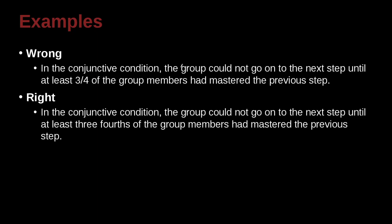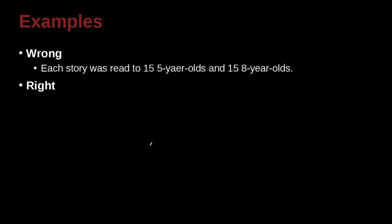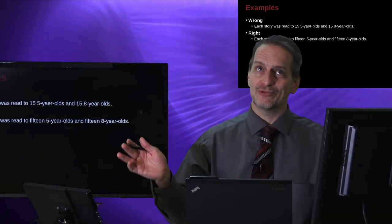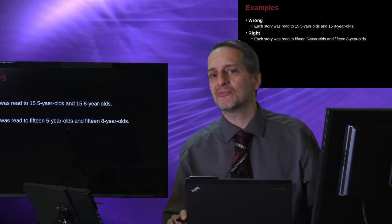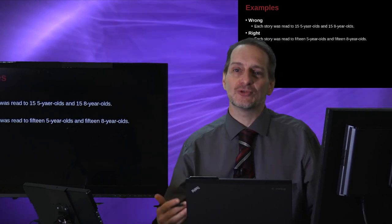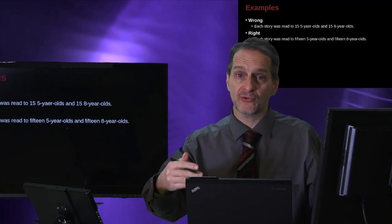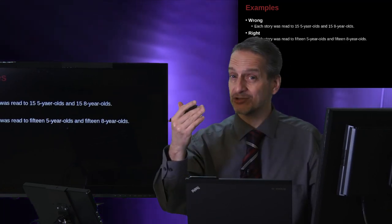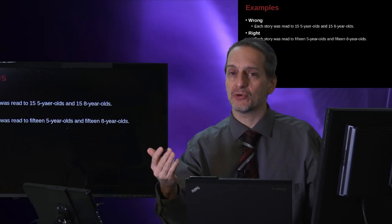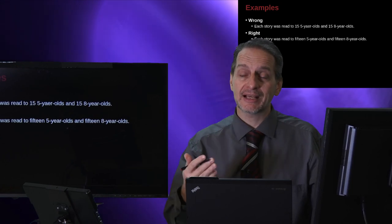In the conjunctive condition, the group could not go on to the next step until at least three-fourths of the group members had mastered the previous step. Here is our fraction three-fourths, and remember we said that in this case, you need to spell it out, three-fourths, because it's a common fraction or a ratio. Except in the case of ratios, you go ahead and you write the ratio. Oh boy, confusing, right? It's really helpful to have the rules next to you, and I just remind you that you can buy the APA guidelines and the MLA as ebooks from Amazon and other ebook providers, which is super convenient to have it on your cell phone or on your tablet or on your PC right next to you.